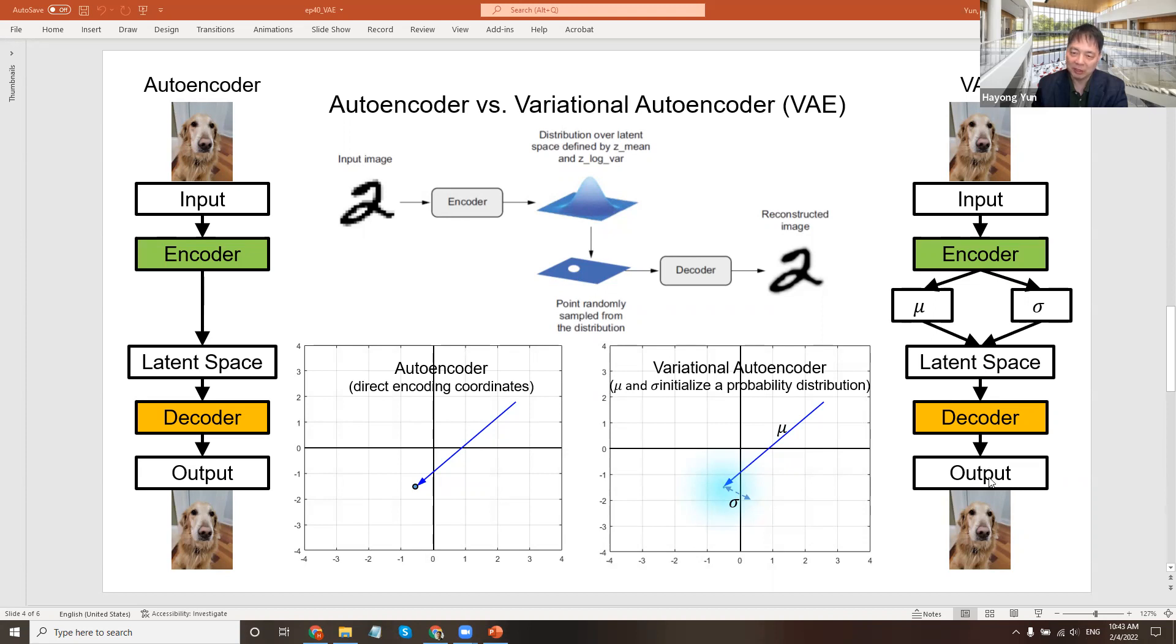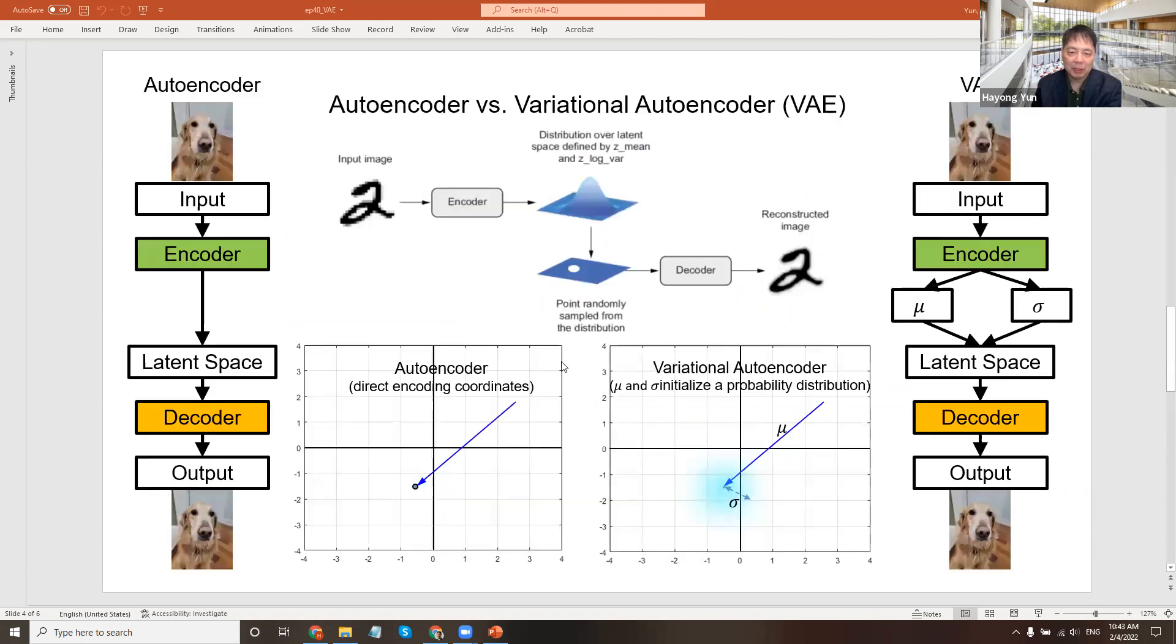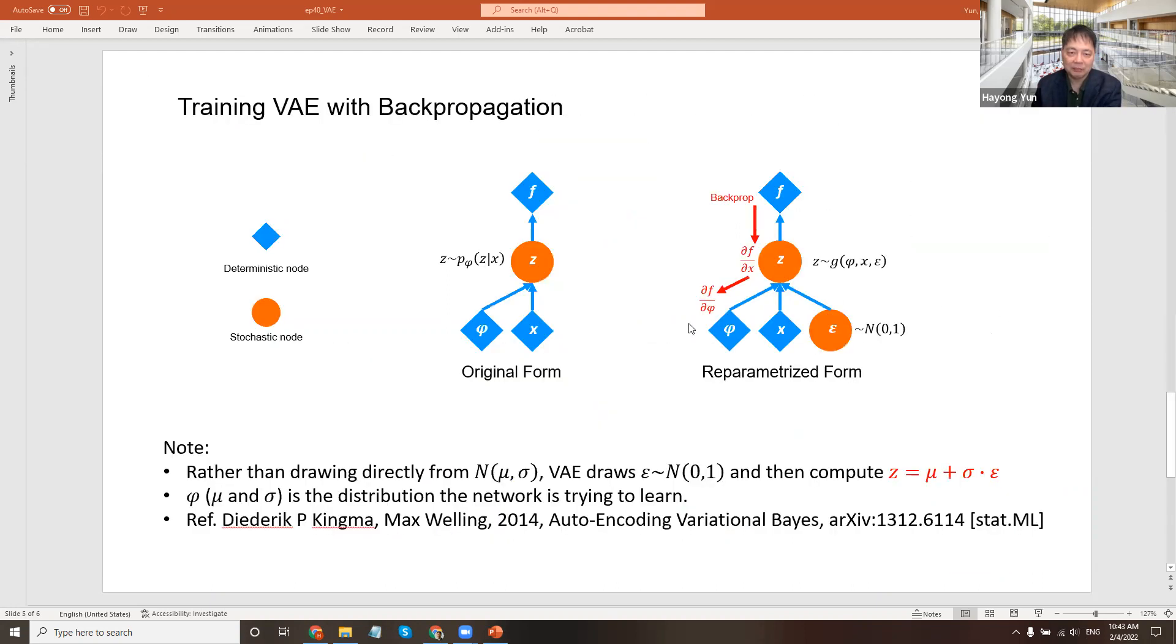So this is what a variational autoencoder does. There's some technicalities, if you're interested. In the original idea, at the bottleneck stage here, there's some parameters like mean and standard deviation and the input values coming out to get a latent space value z from the distribution here.